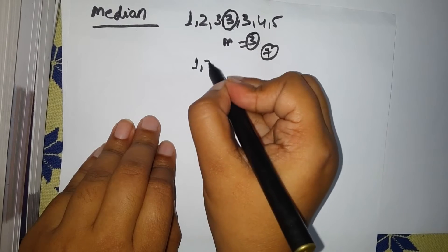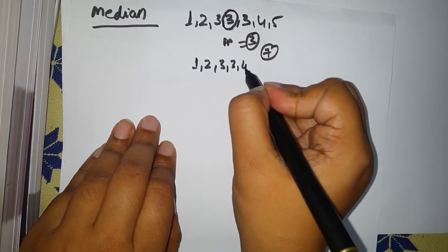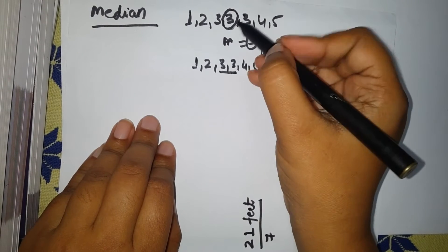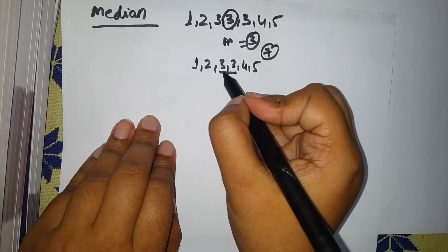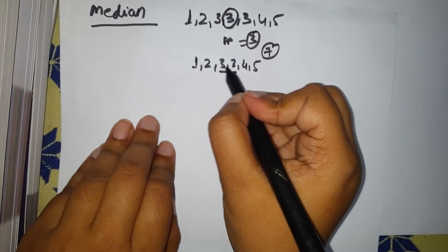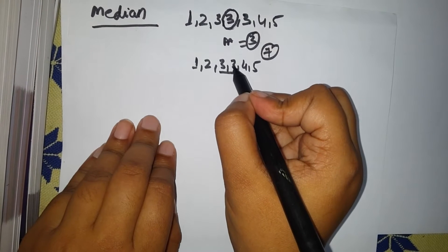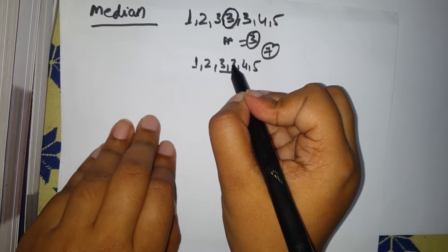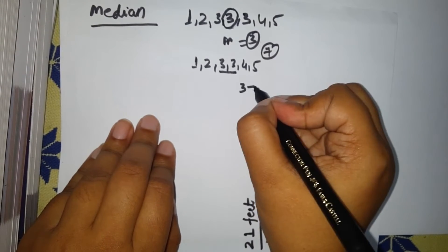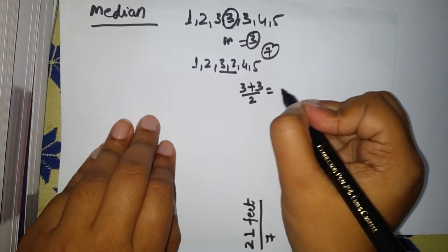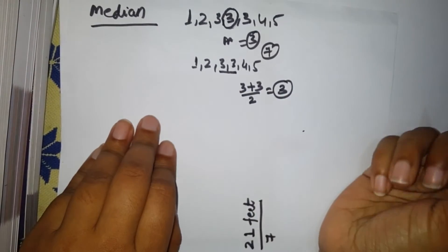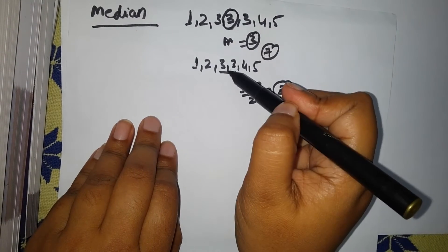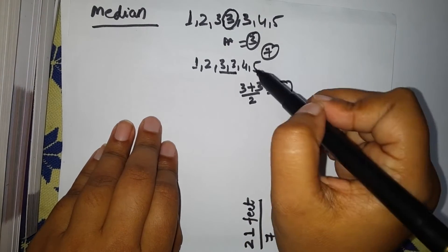What if you have an even number of values, like 1, 2, 3, 3, 3, 4, 5, and one more? If it is odd you get a single center value; if it is even you get two central values. Take those two center values and calculate their average. For example, three plus three divided by two equals three. So median for an odd number of values is the center value; for even, it is the average of the two center values.